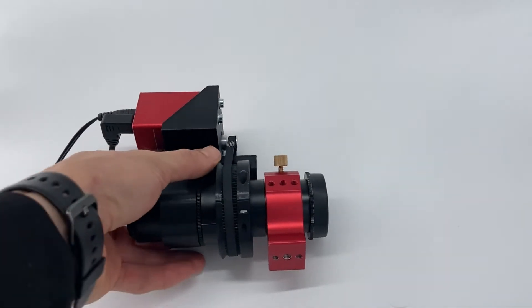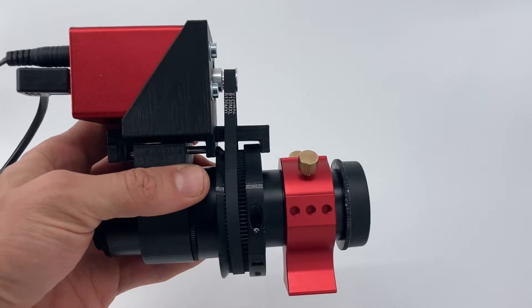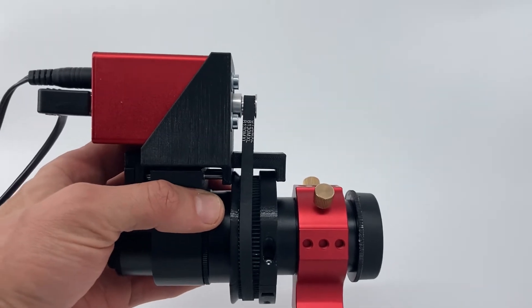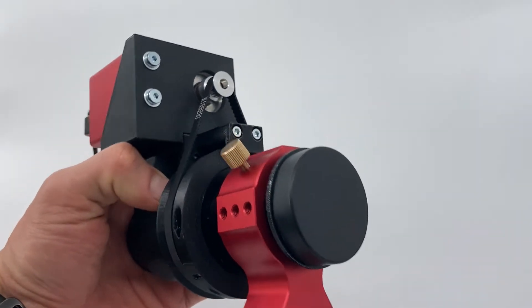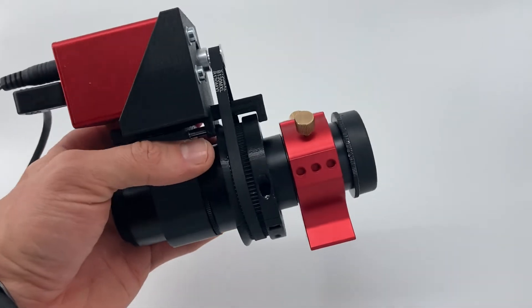Hello fellow astro photographers. This is a quick demonstration of an autofocusing kit for ZWO electronic autofocuser on the Askar FMA135 lens.